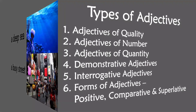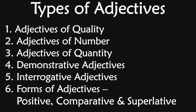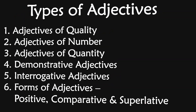The words which are showing something or which are describing something about the noun, we call them as an adjective. Let's learn the types of adjectives. The first type is adjectives of quality. The second one is adjectives of number. Third one is adjectives of quantity. Fourth is demonstrative adjectives. Fifth is interrogative adjectives. And sixth, we are going to learn forms of adjectives — that are positive, comparative and superlative.